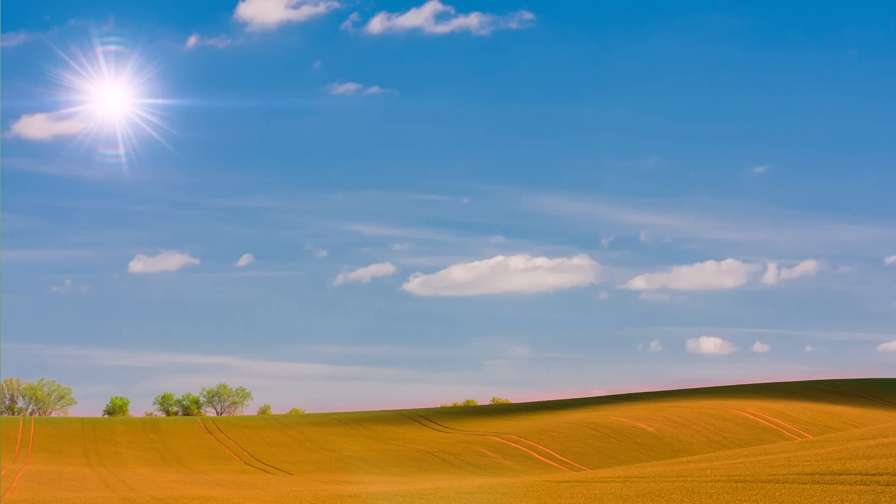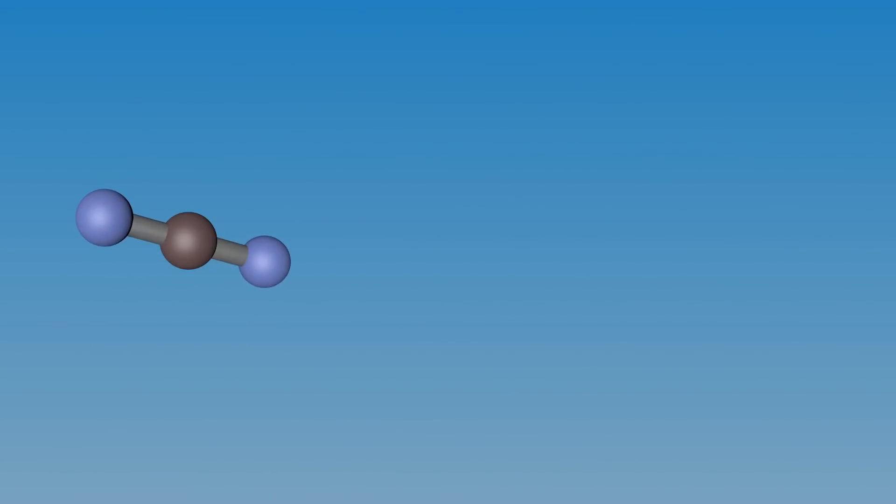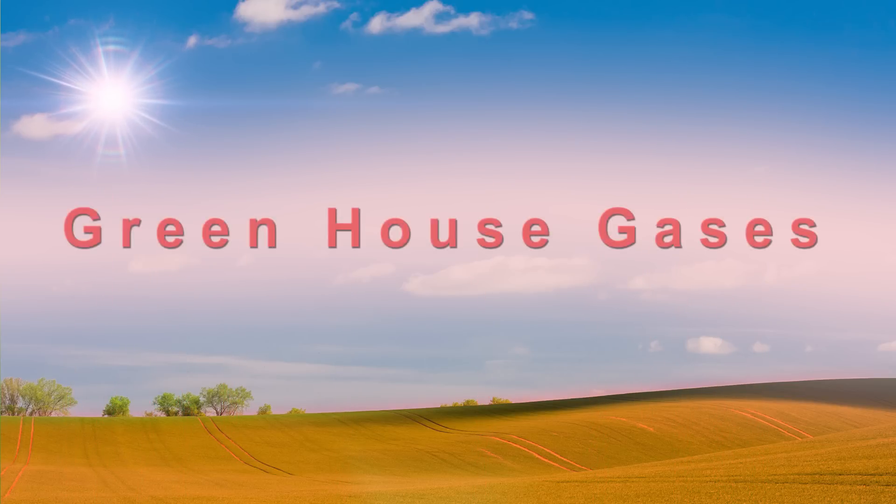But around 90% of this heat radiated out from the Earth is absorbed by some gases present in the atmosphere, and a part of this is re-radiated to Earth, and thus this heat is trapped in the Earth. This trapping of heat prevents Earth from losing heat and reducing temperature, and Earth remains warm. This is called the greenhouse effect.